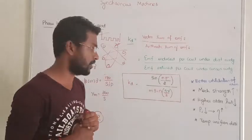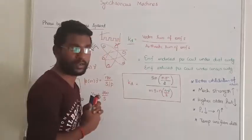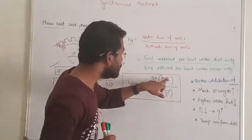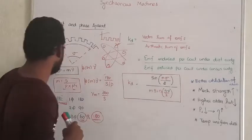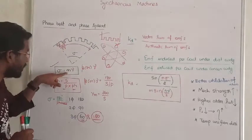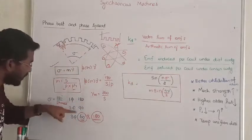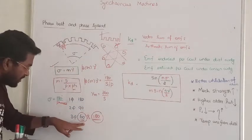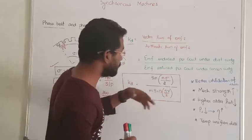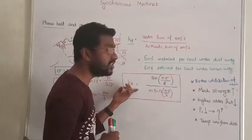For the distribution factor formula: n denotes the order of the harmonic, and sigma is the space spread. You know how to calculate sigma now. Sigma is fixed — for three phase it is 60 degrees, for two phase it is 90 degrees, for single phase it is 180 degrees. So using these values, you can find out the distribution factor.